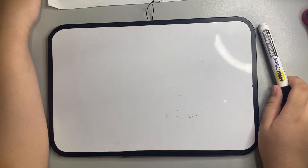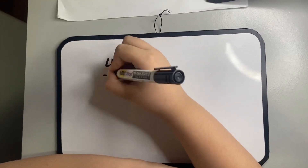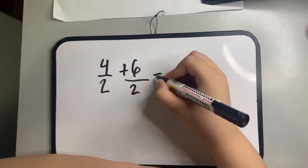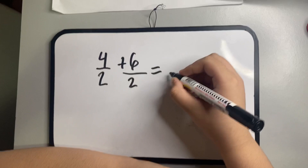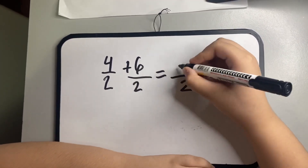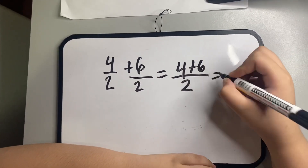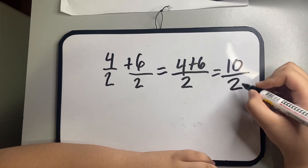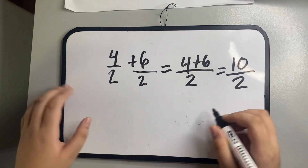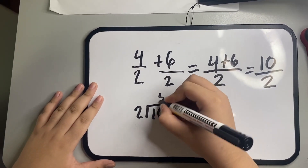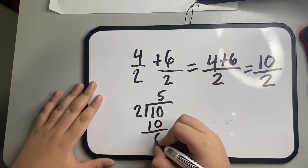First, addition of similar fractions. Let's solve 4 over 2 plus 6 over 2. Since the denominator is the same, let's just copy the denominator. Add the numerator and copy the denominator again. Since it is improper, let's turn it into a whole number. Here's the final answer.